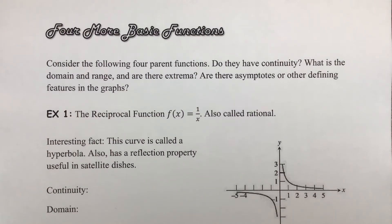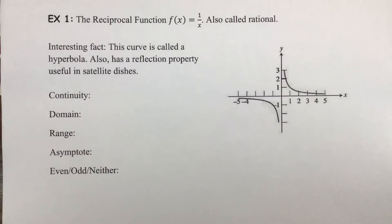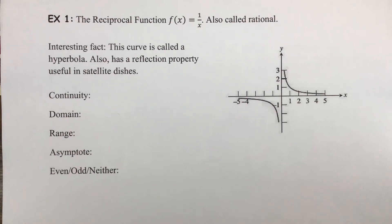asymptotes or any other defining features in the graphs? The reciprocal function f(x) = 1/x is also called a rational function. Interesting fact: this curve is called a hyperbola — that's its shape, much like a parabola is the shape of a quadratic function. It also has a reflection property useful in satellite dishes, and in a later unit on conic sections we'll discuss parabolas and hyperbolas together.